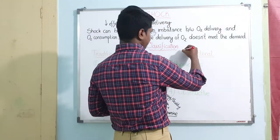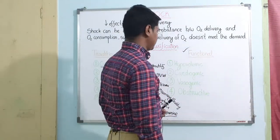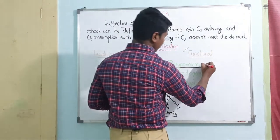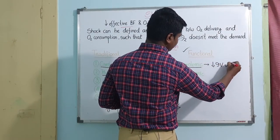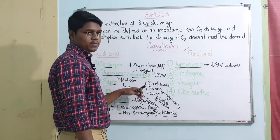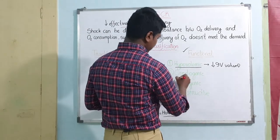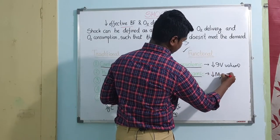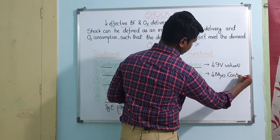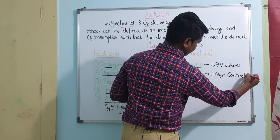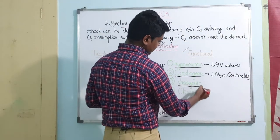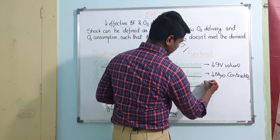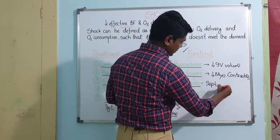Next is the more accepted, most recent classification: the functional classification. First is hypovolemic — same as before, there is reduction in intravascular volume. Second is cardiogenic — also same, with decrease in myocardial contractility due to some pathology of the heart. Third is vasogenic, meaning it originates from pathology of the vessels. Septic shock and traumatic shock come under vasogenic.